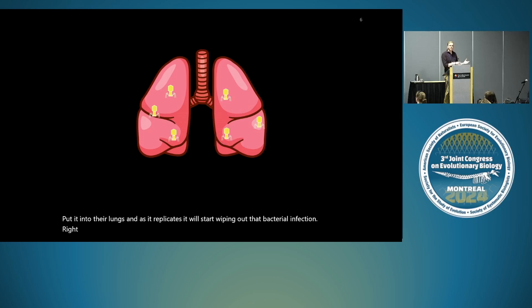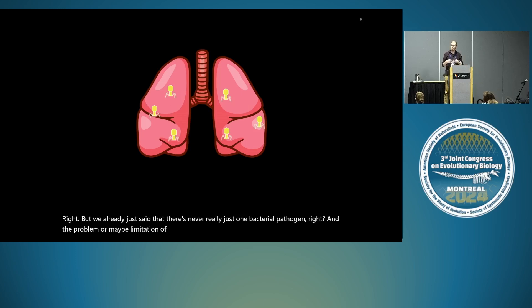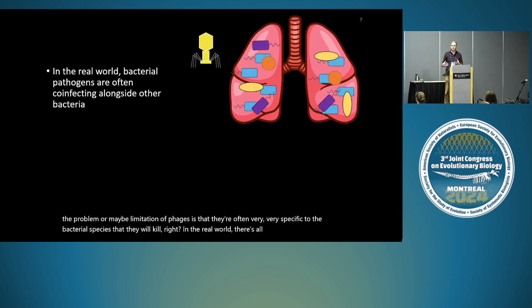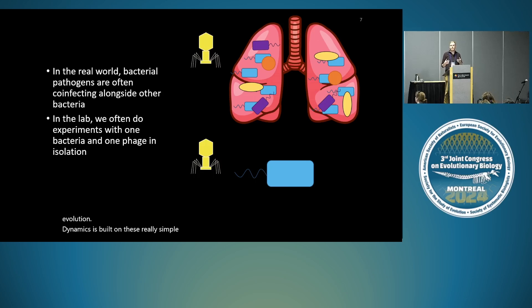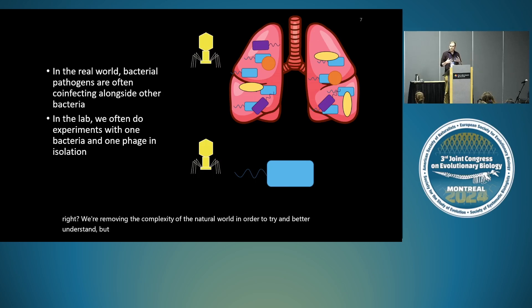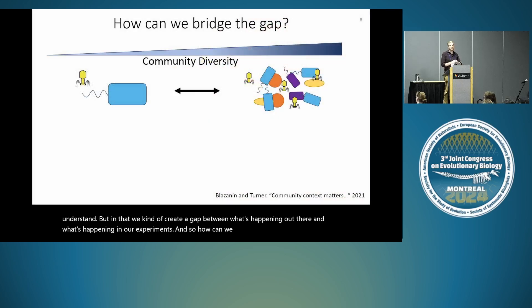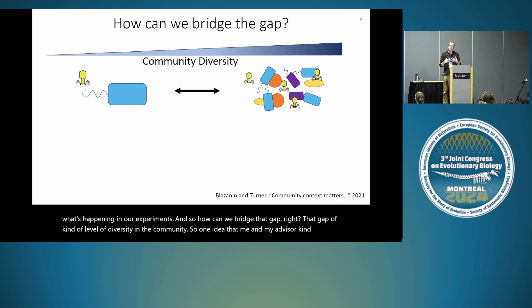But there's never really just one bacterial pathogen. The problem or limitation of phages is that they're often very specific to the bacterial species they will kill. In the real world, there are all these pathogens co-infecting the lung and our phage is only going to knock down one of them. Moreover, in the lab, a lot of our understanding of how phages and bacteria interact is built on really simple experiments done in isolation — removing the complexity of the natural world. In doing so, we create a gap between what's happening out there and what's happening in our experiments.